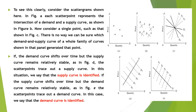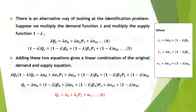We can measure the supply function when it is fairly stable and demand is shifting. Similarly, we can measure the demand function if it is fairly stable while the supply function shows adequate shifting. This implies that if the supply function is to be identified, some variables absent from it but affecting the demand function must be changing. This is called the paradox of identification: in identification, the relevant variables are those which are absent from the equation.